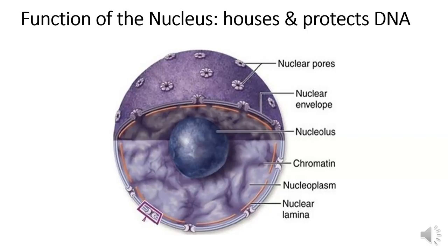The nuclear membrane is made up of two phospholipid bilayers. Within the nucleus is a dark staining region shown in blue on this slide, which stains darkly because of RNA and protein. This is where the ribosomal RNA is made that will become part of ribosomes. Surrounding the nucleolus is thin thread-like material shown in purple called chromatin, which is a loosely coiled form of DNA.